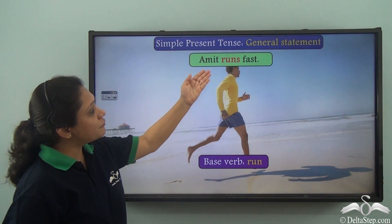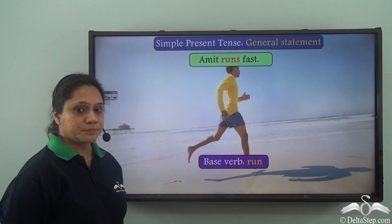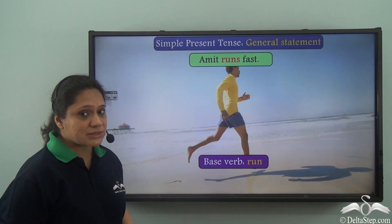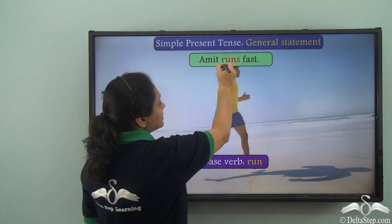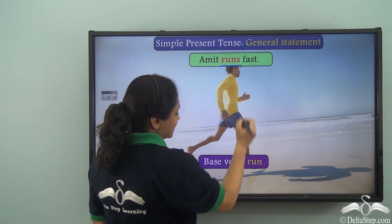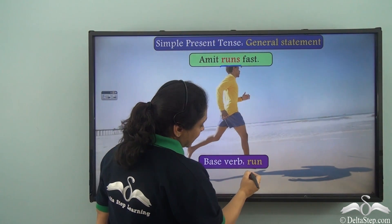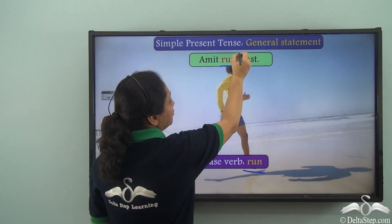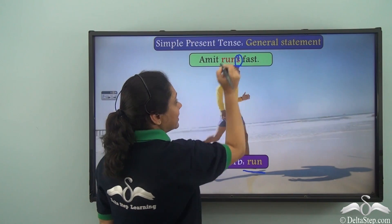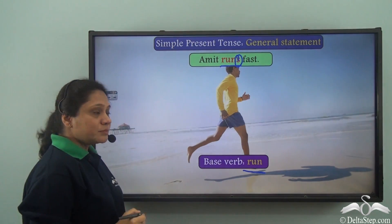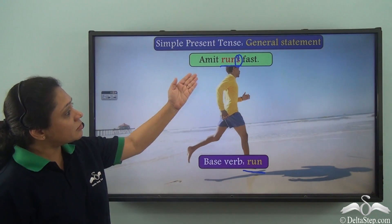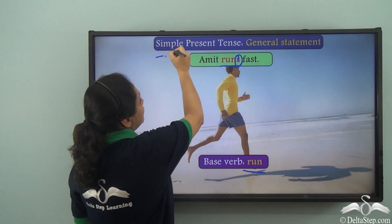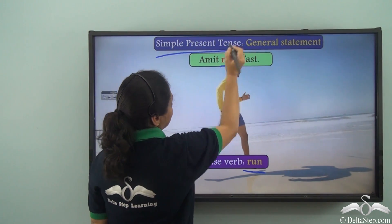Amit runs fast. This is a general statement and runs is formed from the base verb run. This is the singular form — we have added an s. So Amit runs fast is in the simple present tense.